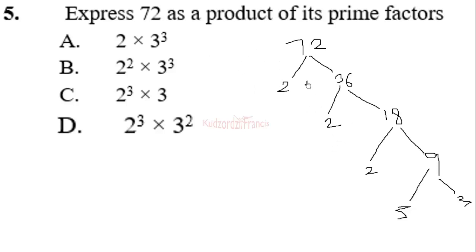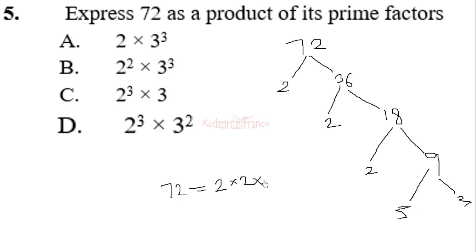To express 72 as a product of prime factors, we write 72 = 2 × 2 × 2 × 2 × 3 × 3, which can also be written as 2 to the power 4 times 3 squared.